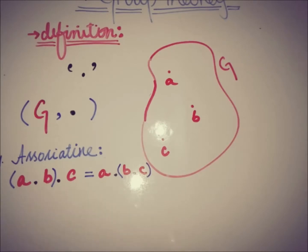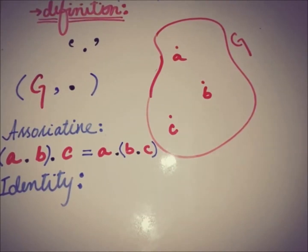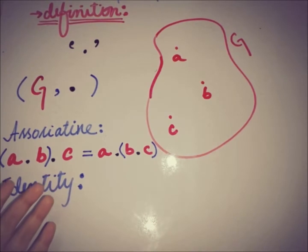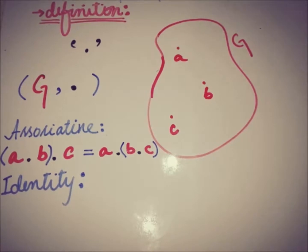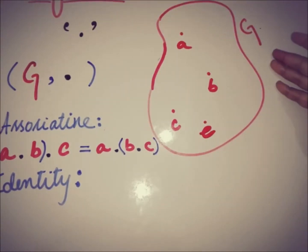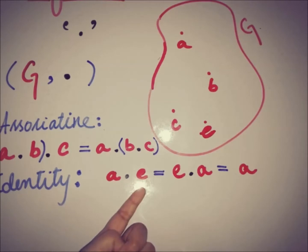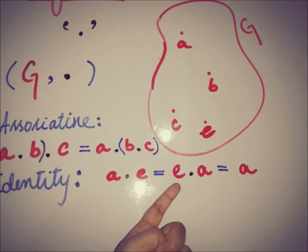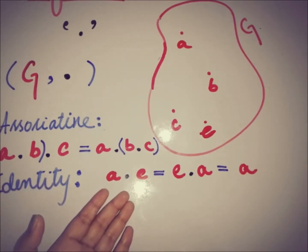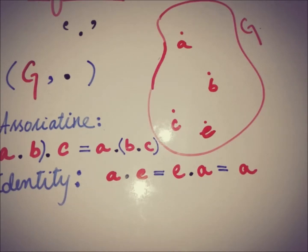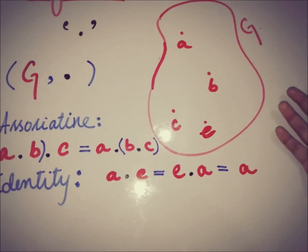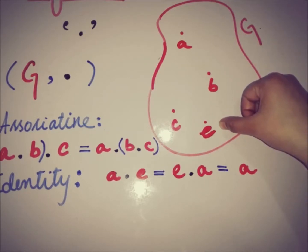The second axiom is the existence of identity. With respect to the multiplication operation, there must be an identity element E in the non-empty set G such that for any element a of G, a·E = E·a = a. That is, when we multiply any element of G with the identity element, we get back that same element.